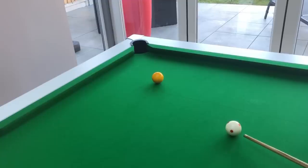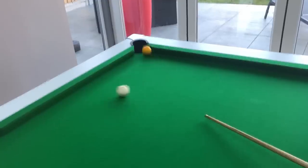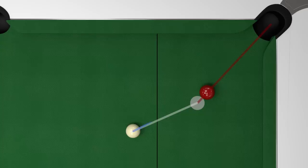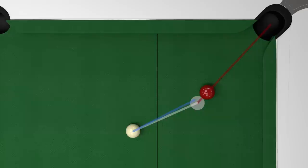So how do we go about correcting this so that we can apply sidespin and still make the pot? As we saw, if you use lots of right hand side, the cue ball shoots out to the left. So that the cue ball still strikes the object ball where we originally intended, we need to aim a little to the right of the object ball.